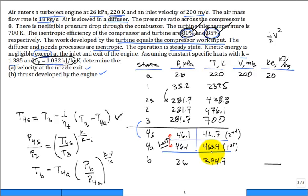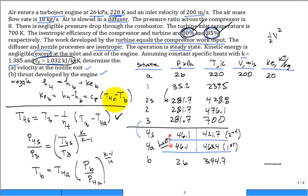So, we do the first law. Maybe I can put it right here. First law for the nozzle. We have the inlet enthalpy at 4 equal to the exit enthalpy at B plus the kinetic energy at B. So, the kinetic energy at B is equal to H4 minus HB, which is C sub P, T4 minus T, B, 4 actual, 4 actual, 4 actual.